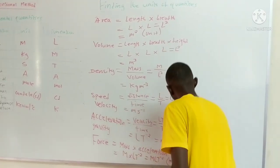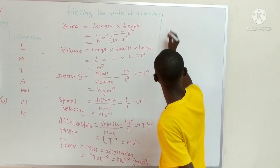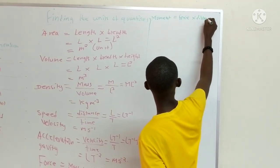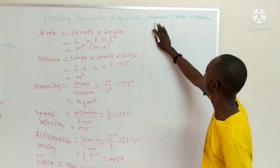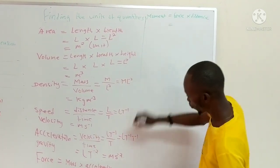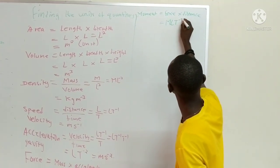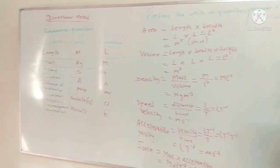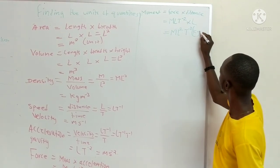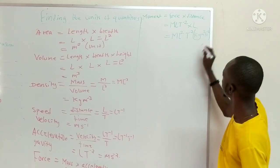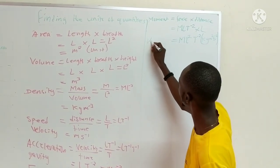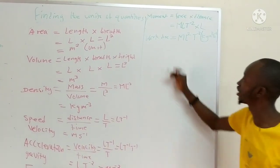After force, let's consider moment. Moment is force times distance. Moment can also be measured in different forms because moment, work done, and energy all have the same dimension. The dimension of force is MLT⁻², and the dimension of distance is L. Multiplying, we have ML²T⁻². The unit of mass is kilograms, unit of length is metres squared, and time is s⁻², so the unit of moment is kilogram metres squared per second squared (kg·m²·s⁻²). Moment and work done have the same unit.